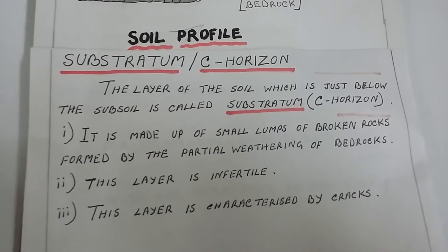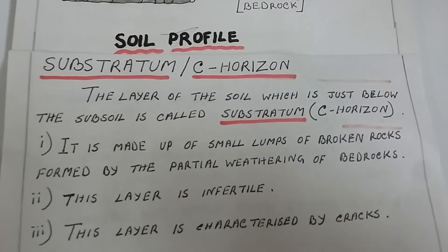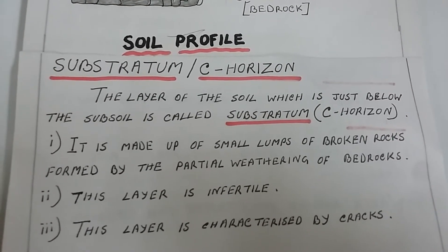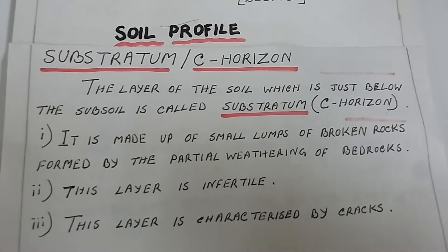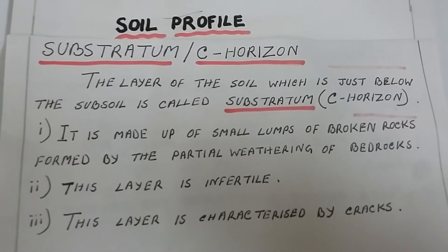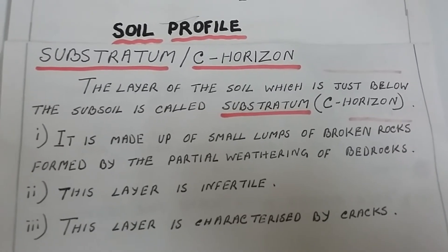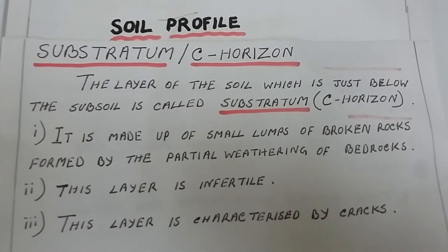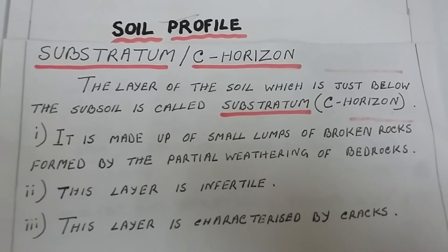The layer of soil just below the subsoil is called substratum or the C horizon. It is made up of small lumps of broken rocks formed by the partial weathering of bedrock which lies below this layer. This layer lacks humus altogether and is completely infertile. This layer is characterized by cracks and crevices.